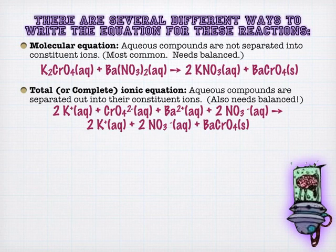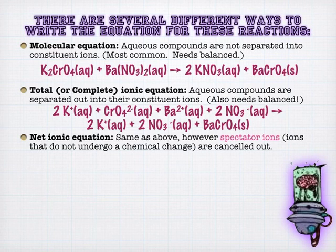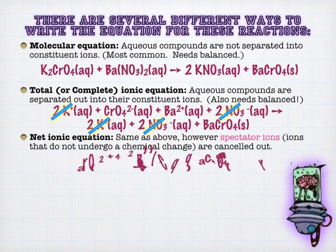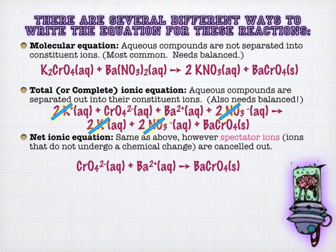And then what we can do is we can cross out what are called spectators, the ones that aren't really doing anything. For example, if you can see potassium really doesn't do anything. It just floats around the whole time. And so does nitrate. It just floats around the whole time. So we can go ahead and cross those out. And we get what's called a net ionic. So total and net. Or some people call it the complete ionic. And so really what we have is barium and chromate forming barium chromate. That's really the reaction that takes place. And so those are three different ways of writing these reactions.